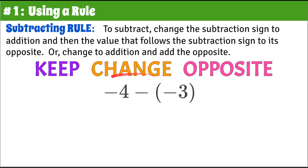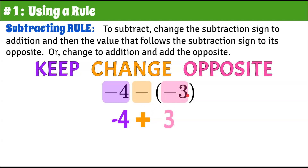So anytime we see a subtraction problem, we are finding the difference. We're going to do keep — so negative four stays negative four — change the subtraction sign to addition, and find the opposite value of the number that follows the subtraction sign. So negative three, the opposite is three. Keep, change to addition, opposite. So now we have an addition problem: negative four add positive three.